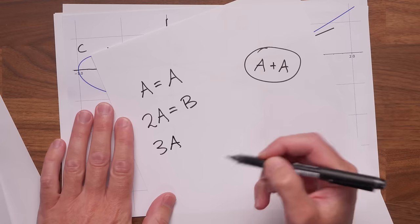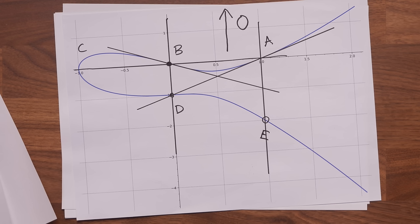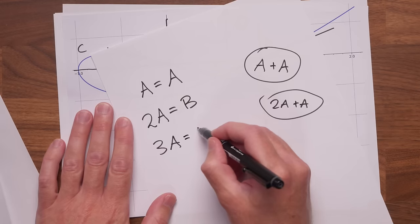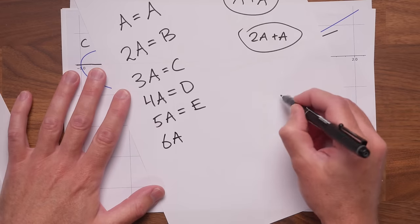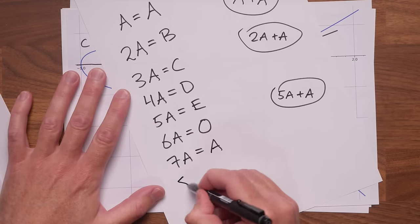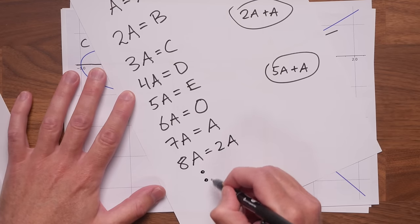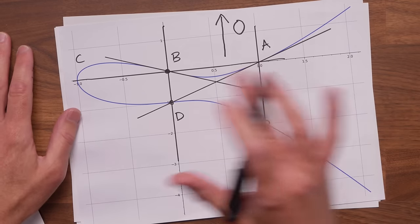3A means 2A plus A. And now you can pause the video and do the rest. What we get is 3A equals C, 4A equals D, 5A equals E, and 6A, that is, by definition, 5A plus A. That is zero. And then 7A is A, 8A is 2A, and so on. I wanted infinitely many points, but that did not work. We are doomed to go round and round forever.